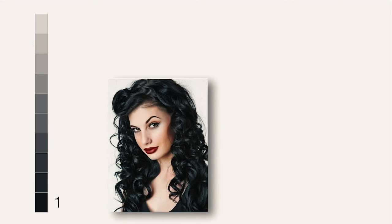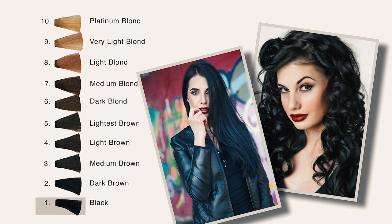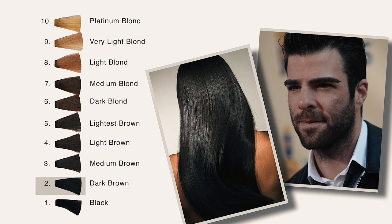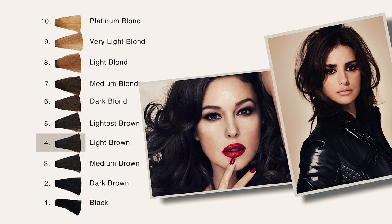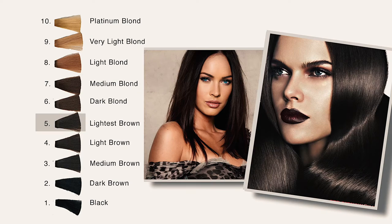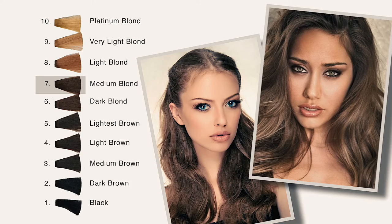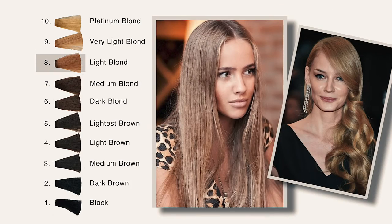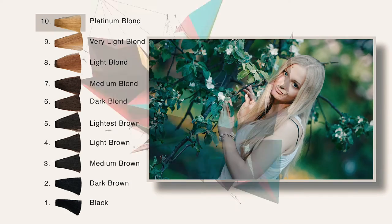Each color chart division has its own name. Number one is the darkest, that is black, and number ten is the brightest natural color. The first is black. The second is dark brown. The third is medium brown. The fourth is light brown. The fifth is lightest brown. The sixth is dark blonde. The seventh is medium blonde. The eighth is light blonde. The ninth is very light blonde. And the tenth is platinum blonde.